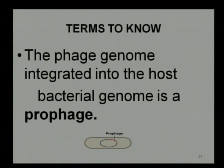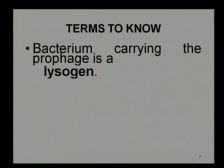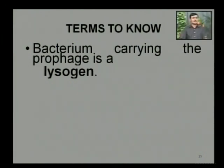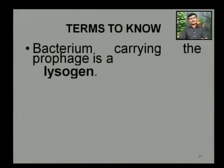As you can see in the figure on your screen, the red line shows the structure of the prophage, and the second black line indicates the host genome. Another important term is lysogeny. Any bacterium which carries the prophage is called a lysogen — it is a bacterium which carries the bacteriophage, and that is ultimately known as a lysogen.